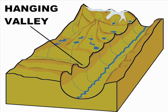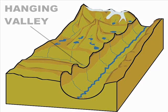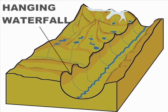Hanging Valley. This valley is formed by a tributary that ends at a cliff above a larger trunk glacial valley. Hanging Waterfall. A waterfall that forms in a tributary hanging valley, falling into the valley formed by the main trunk glacier.